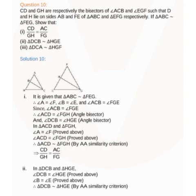Since angle ACB equals angle FGE, and CD and GS are bisectors, bisecting those equal angles gives equal half-angles. So angle ACD equals angle FGH and angle DCB equals angle HGE, because CD and GS are bisectors.